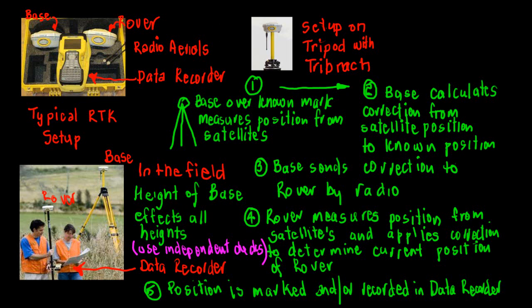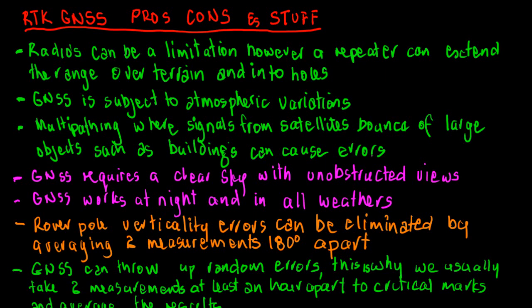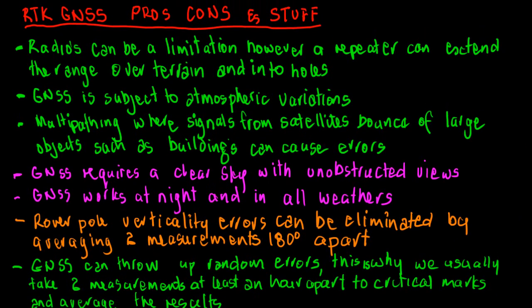We're just going to have a look at a few little further bits of information about RTK and some things that we know about it, some pros and cons and other stuff. The radios can be a bit of a limitation however we can use a repeater. A repeater radio can be used to extend the range over terrain or perhaps into holes and things like that. If say for instance I'm working in a mine or something like that, use the repeater to get down into the mine where it's quite deep. Basically what happens is the correction from the base is radioed to the repeater, the repeater then repeats the correction and radios it to the rover. So it enables you could put it on the top of a high hill and go from one side of the hill to the other where radio coverage through or around the hill may not be possible.